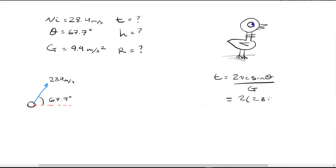So, 2 times 28.4 times the sine of 67.7 over 9.9. And let's just do some calculator stuff here. Make sure your calculator is in degree mode when solving the sine and cosine functions that we'll do later. And this time gives me, it's going to be 5.3 seconds.